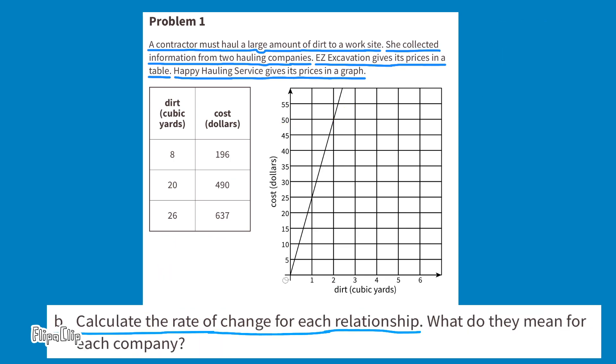Calculate the rate of change for each relationship. What do they mean for each company? I think we're just comparing the rate of change for each company. The slope for Happy Hauling's graph is 25 units up, or the rise is 25 units, and 1 unit to the right, or a run of positive 1, making the slope and the rate of change 25 over 1, or 25. The rate of change for Happy Hauling's service is $25 per cubic yard.